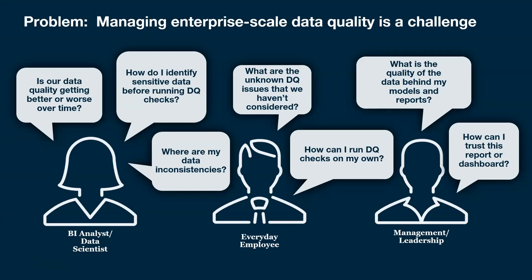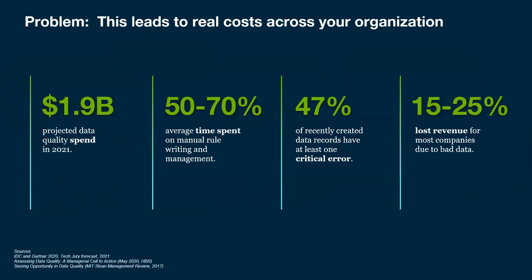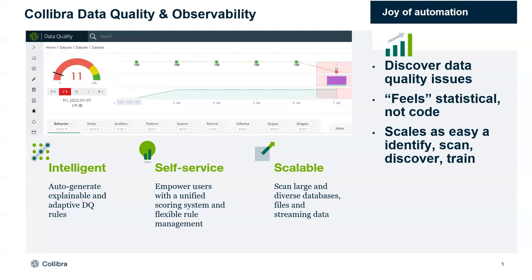All these questions are driving a lot of operational headaches and costs, whether it be 50 to 70% of time spent on manual rule writing, 15 to 25% lost revenue due to bad data, and $1.9 billion in data quality spend — perhaps being manual, perhaps hiring new FTEs, trying to create manual processes to manage all the data quality. And that's exactly how Calibra Data Quality can help — leveraging technology where business and IT can collaborate in a self-service fashion, built-in with ML and AI into the platform, giving you auto-generated rules, adaptive rules, and rule discovery to automate the rule writing process, built on a modern Spark architecture.